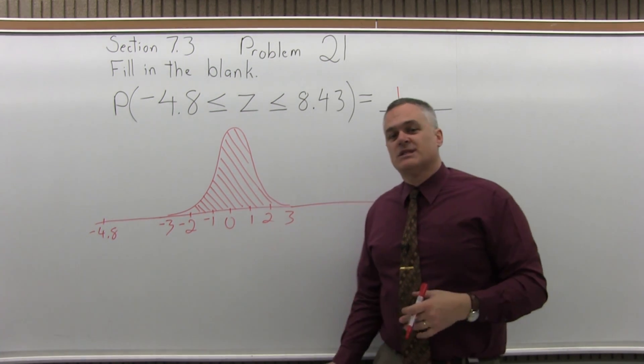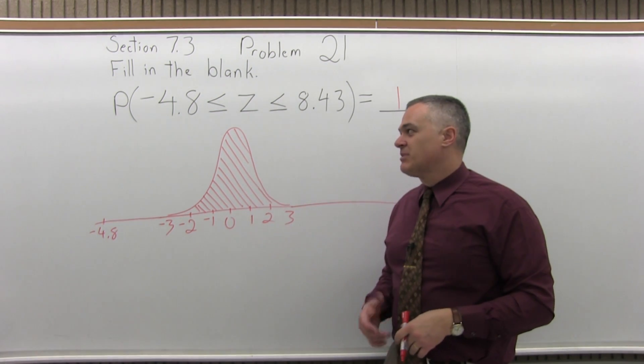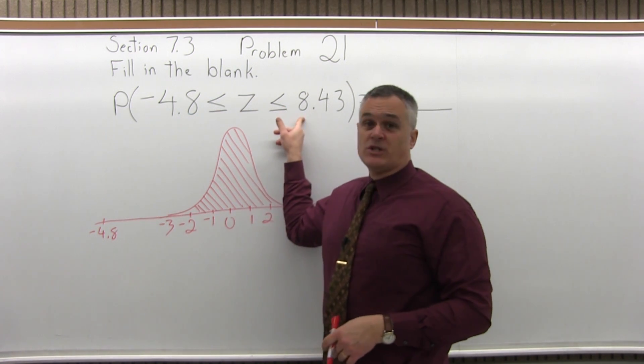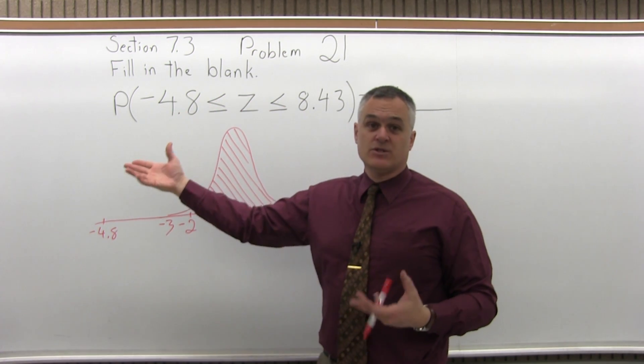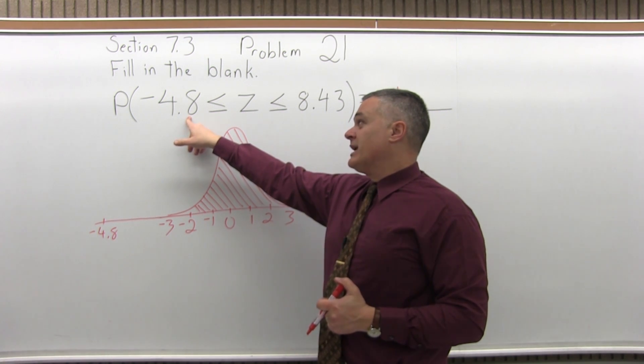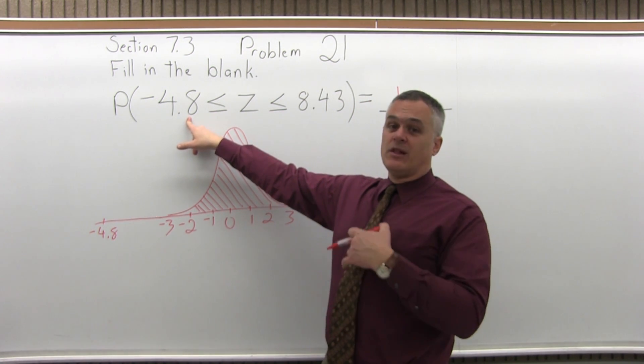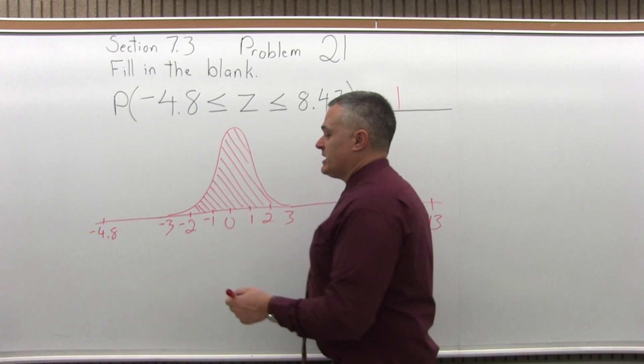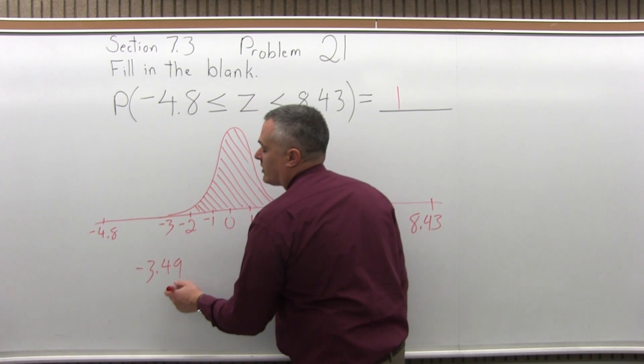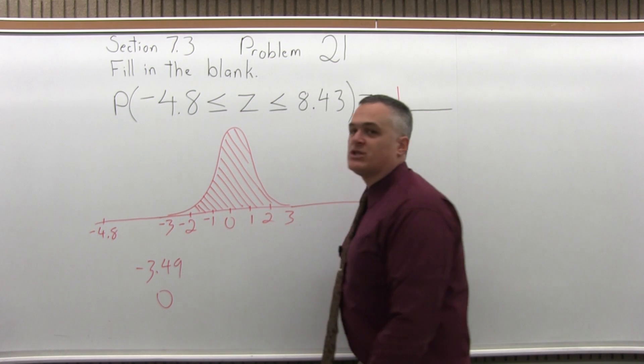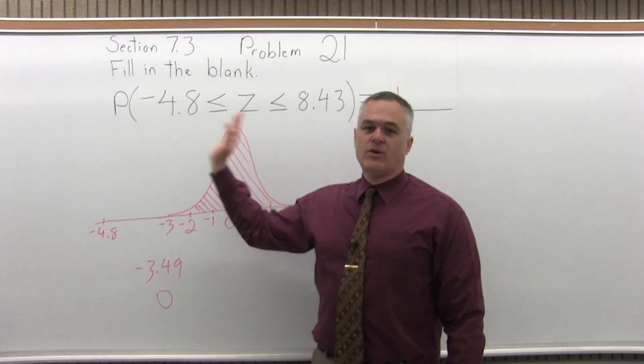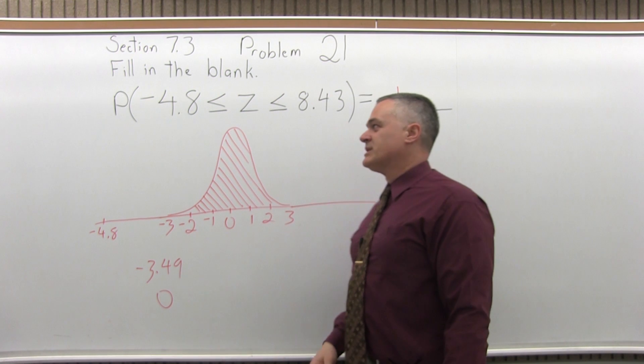But to do the process properly through the steps that are explained in the notes, what you would do is you have an in-between question, so you're going to find two chart values and subtract the two chart values. So for the negative 4.8, you've gone off the chart on the left end and there's an explanation in the notes that says for values less than negative 3.49, the chart value is essentially 0. Once you go past that negative 3.49, they're all going to be 0, within any type of reasonable round off.